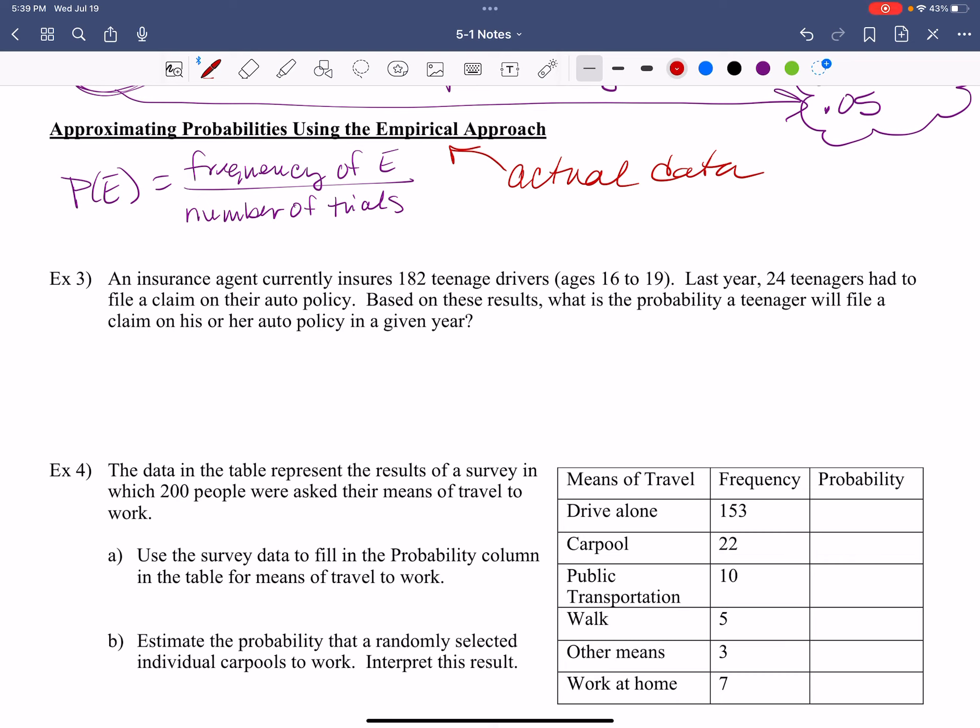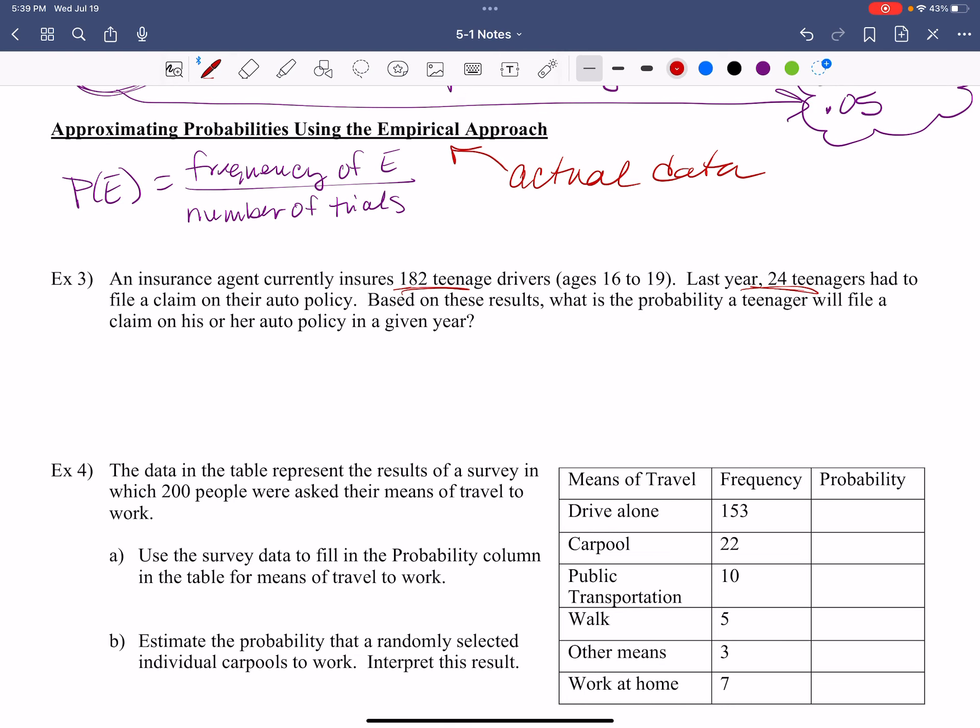So look at this example three. An insurance agent currently insures 182 teenage drivers. Last year, 24 had to file a claim. Based on these results, what is the probability a teenager will file a claim on his or her auto policy in a given year? So we're looking at the probability of filing a claim. This is how many is in the event. So there's 24 out of how many total possible, which is 182.